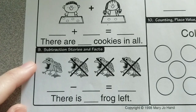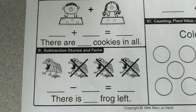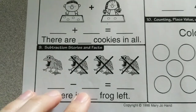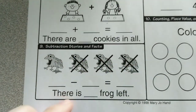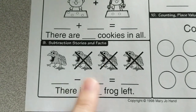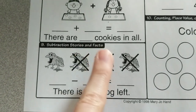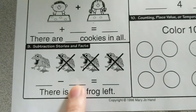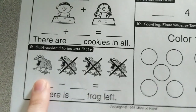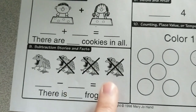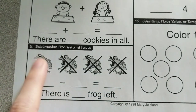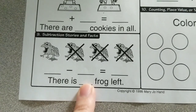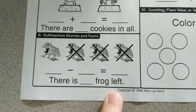Subtraction stories. Let's see how many frogs we started with — it doesn't matter if they have an X or not, count how many frogs altogether and put that answer first. Your second number will be how many frogs are crossed off. Then subtract to find how many frogs are left, or how many frogs do not have an X. Also answer the sentence: there is blank frog left.